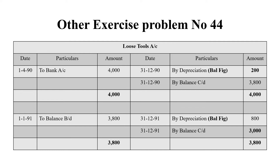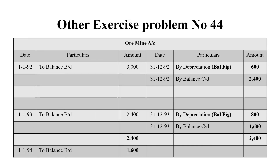Rs. 3,800 minus Rs. 3,000. We bring down Rs. 3,000 to the next year. So in 1992, the opening balance is Rs. 3,000. On the year-end, the revalued closing balance is Rs. 2,400. Rs. 3,000 minus Rs. 2,400 gives Rs. 600 as the balancing figure, and that Rs. 600 is the depreciation. We then bring down Rs. 2,400 to the next year, which is 1993.